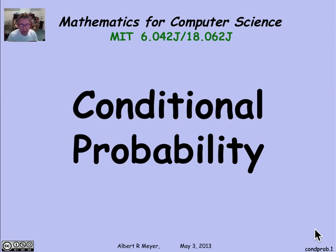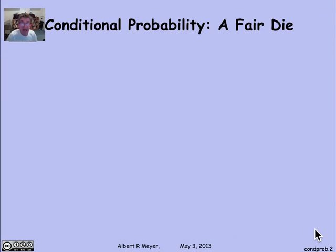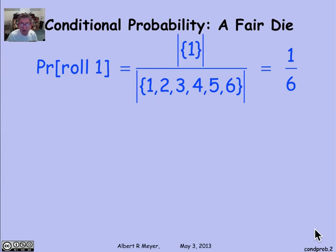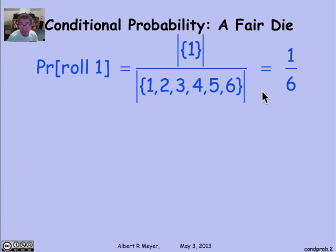Let's look concretely at a very simple illustrative example of conditional probability, where we roll a fair die. With an ordinary fair die, I've got six equally likely outcomes: 1, 2, 3, 4, 5, 6. The probability that in one roll I roll a 1 is the number of outcomes involving rolling a 1 divided by the total number of outcomes — it's 1/6. The probability of any given face of a six-sided fair die is 1/6.